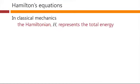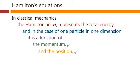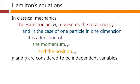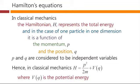In classical mechanics, we can write a function called the Hamiltonian that represents the total energy. In the case of a particle in one dimension, it's just a function of the momentum p and the position q, where p and q are considered to be independent variables. Hence, in classical mechanics, our classical Hamiltonian is p squared over 2m plus V of q, where V of q is just the potential energy — a function of position q.